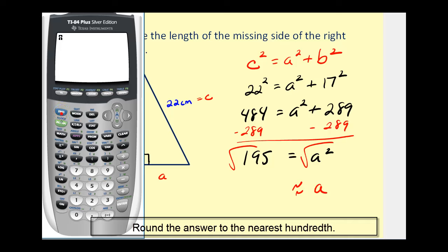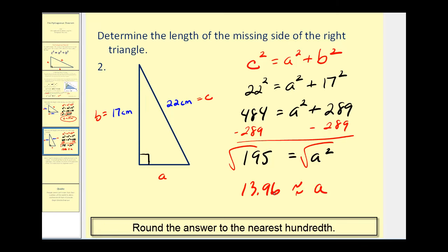Now 195 is not a perfect square, so let's go to our calculator. So second X squared brings up the square root, 195. That's approximately 13.96, in this case centimeters. So we found the length of the missing leg.